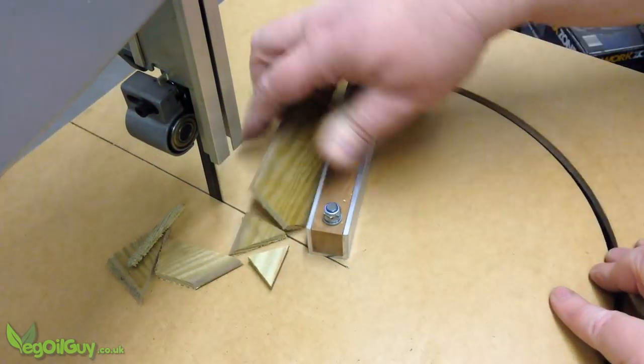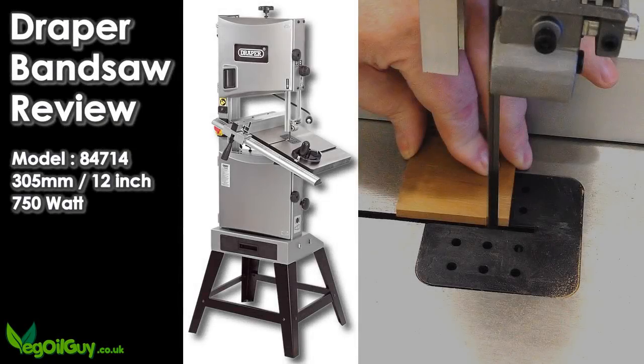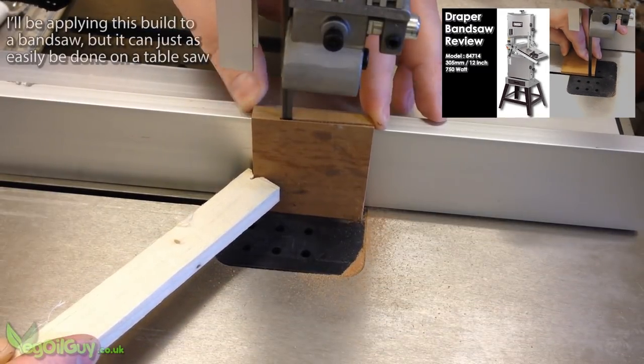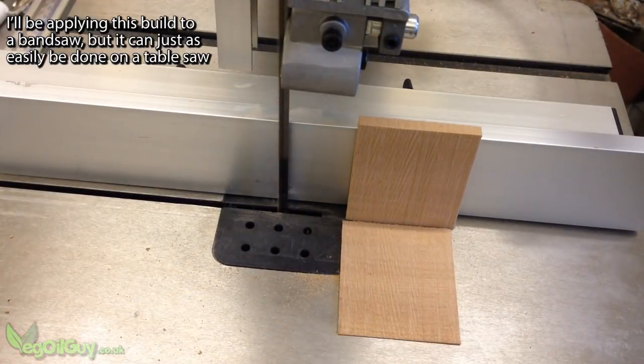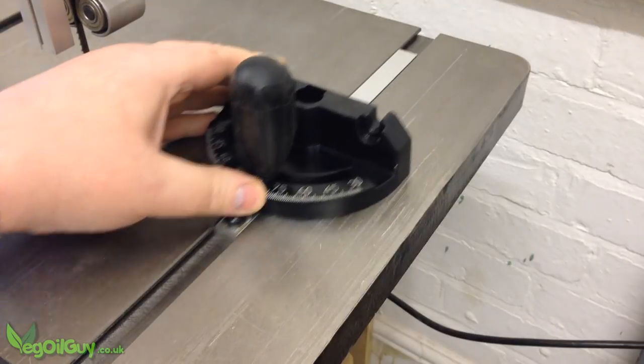Let me show you how I made this one. If you saw my review of this Draper band saw a few weeks ago, you might recall that I liked the saw. But like most saws out there, the mitre gauge was quite weak.